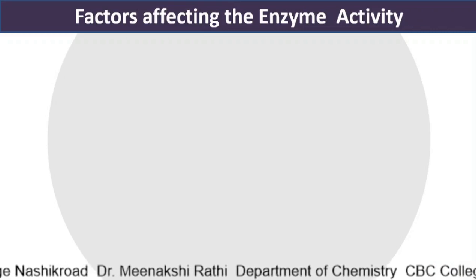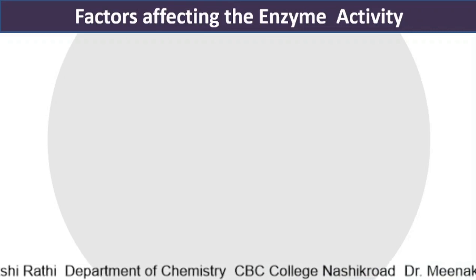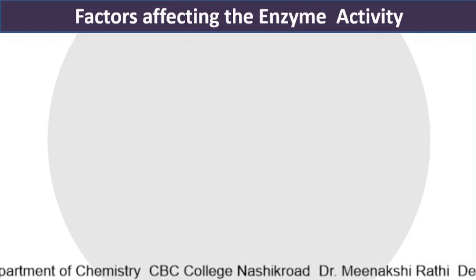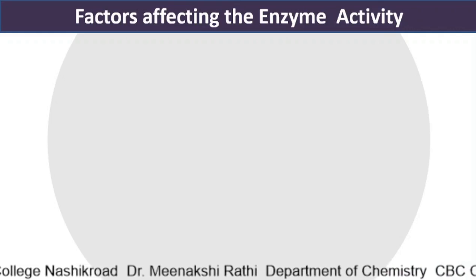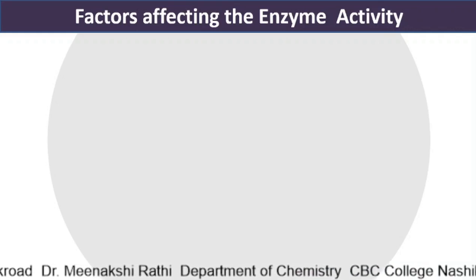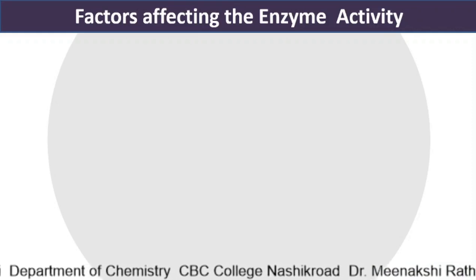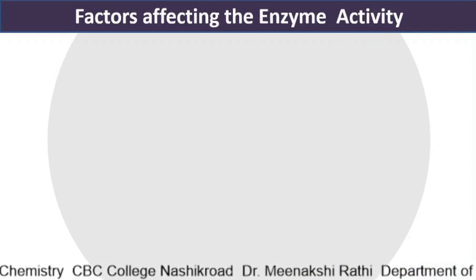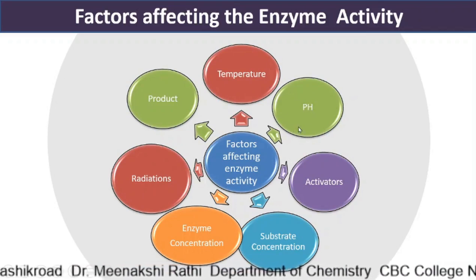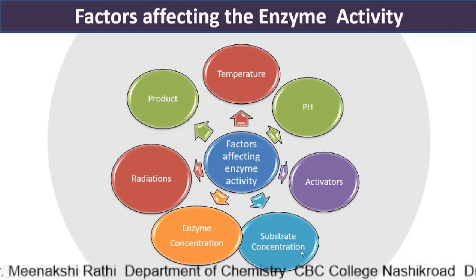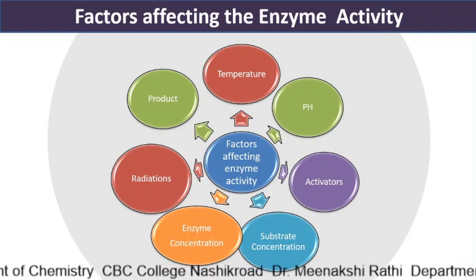Let us discuss the factors affecting enzyme activity. You need to remember that enzyme activity is totally dependent on the contact between enzyme and substrate to form enzyme-substrate complex. Formation of enzyme-substrate complex is the most essential prerequisite for enzyme activity. There are various factors which affect enzyme activity: temperature, pH, various activators, concentration of substrate, enzyme concentration, radiation, and product concentration.